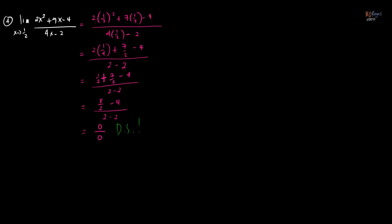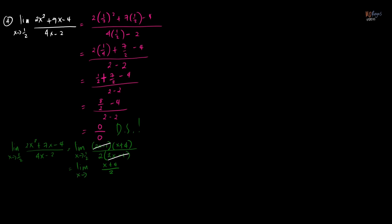We factor the numerator. The function is (2x² + 7x - 4)/(4x - 2) as x approaches 1/2. In factored form, the numerator is (2x - 1)(x + 4). The denominator factors as 2(2x - 1). So (2x - 1) divided by itself is 1, leaving us the limit of (x + 4)/2 as x approaches 1/2.